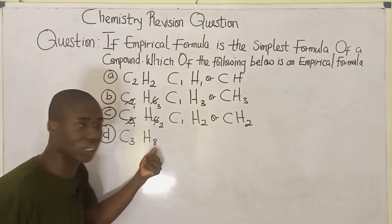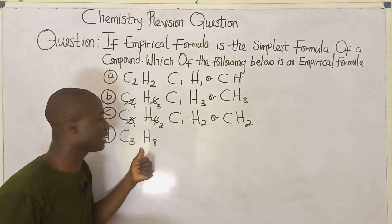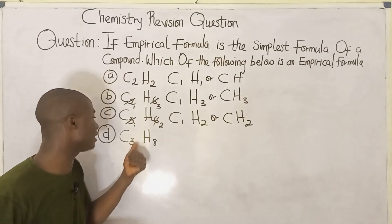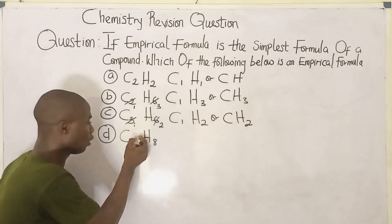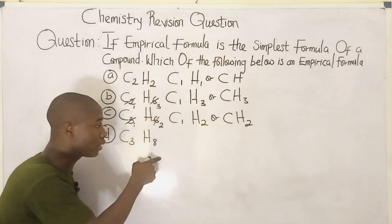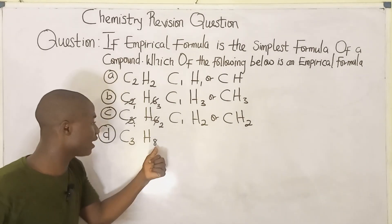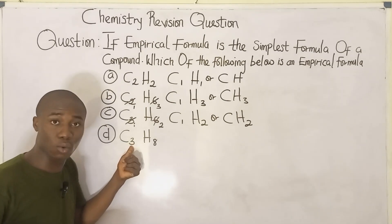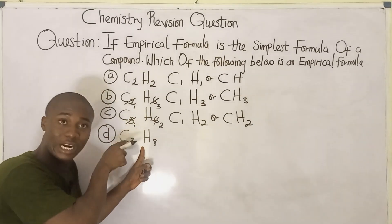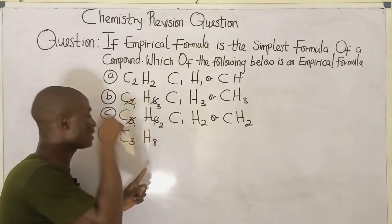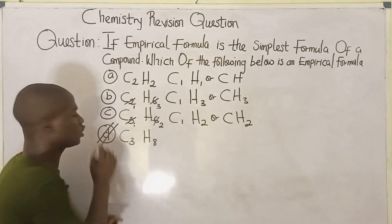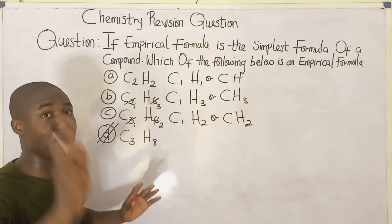For option D, which is C₃H₈ — can a single number divide evenly into both 3 and 8? No. Three divided by 3 gives 1, but 8 divided by 3 does not give a whole number. There is no common factor, so this is already in its simplest form. Therefore, option D, C₃H₈, is the empirical formula.